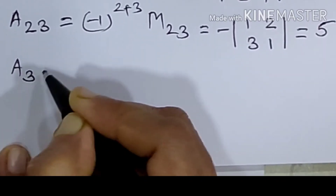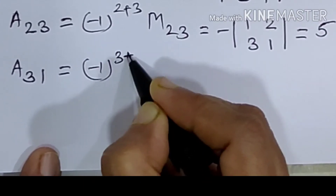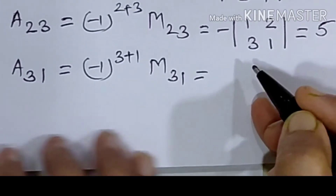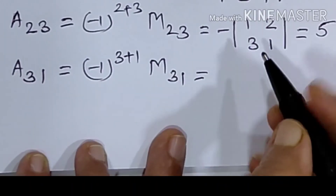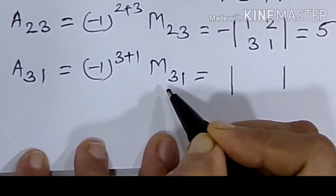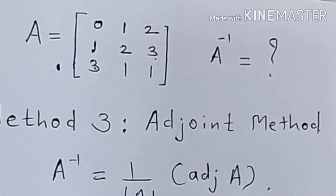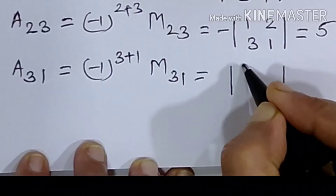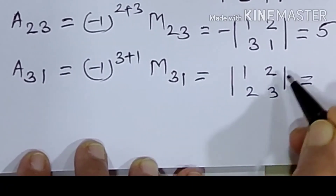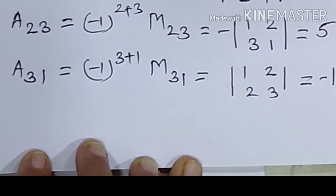Next, A31 is equal to minus 1 raised to 3 plus 1, into M31. That is minus 1 raised to 4, which is even power, so positive of the determinant. Deleting the third row and first column gives elements 1, 2, 2, 3. That equals 3 minus 4, equal to minus 1.